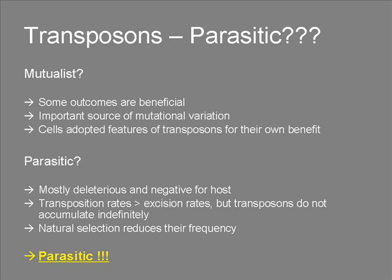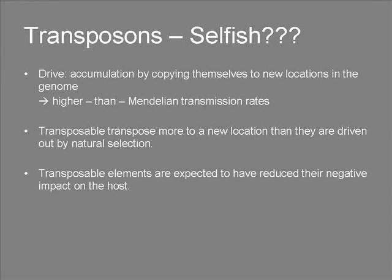The only reason why they persist is because they manage to achieve higher than Mendelian transmission rates. Being parasitic, however, does not mean they are only harmful — sometimes the effect can by coincidence also be beneficial. Transposable elements belong to the group of selfish genetic elements. Of all so-called selfish elements, transposons show the most unusual form of drive. While other selfish elements compete for representation at a given locus, transposons accumulate in the genome by producing copies of themselves and inserting them around the genome, thereby reaching higher than Mendelian transmission rates. Transposable elements can persist in a host's gene pool, even if every insertion reduces the fitness of the host, because on average they transpose more to a new location than they are driven out by natural selection.